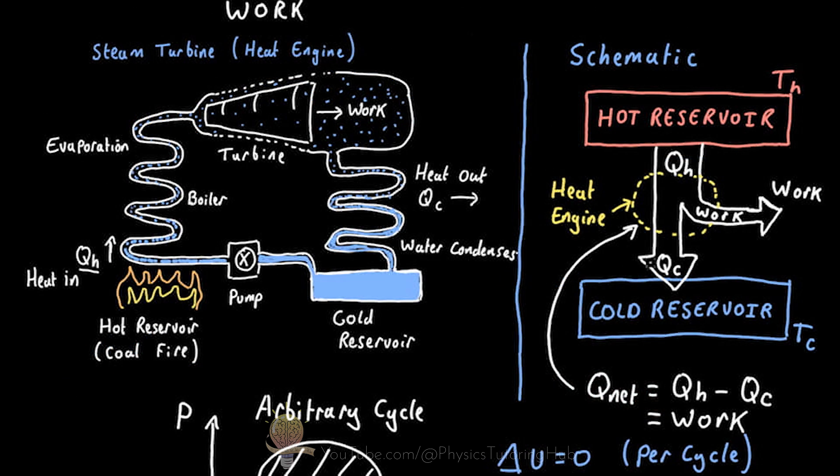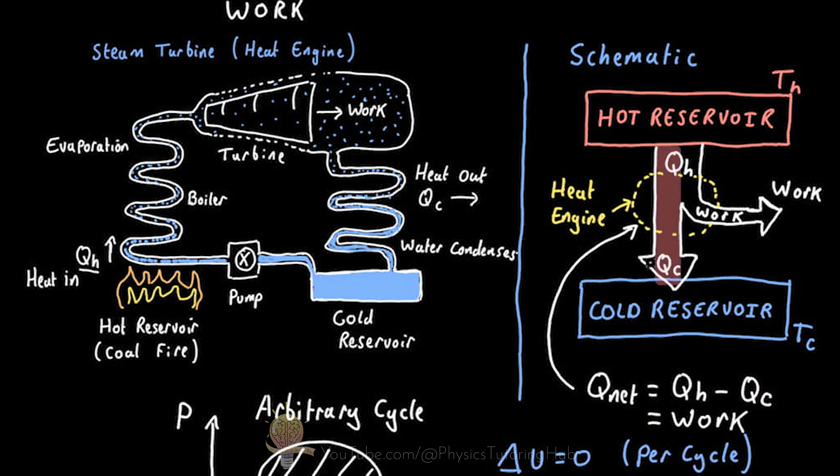The net energy is equal to the amount of heat supplied by the hot reservoir Q_H minus the amount of heat dumped into the cold reservoir. We cannot extract all of the heat and convert it into work because that would violate the second law of thermodynamics, but we can extract a net amount of heat which equals the work done by the engine. This doesn't violate the first law, which is effectively an energy conservation law — energy doesn't appear from nowhere and doesn't disappear; it simply gets converted from one form to another.